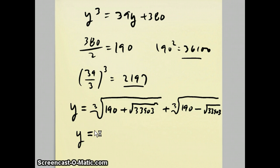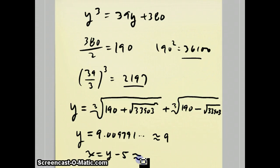Now when you plug this thing into a calculator, you're going to get an answer that's a little bit bigger than 9. It actually becomes 9.009791, which is pretty close to 9. And you might remember that x was equal to y - 5. That was the original substitution we did, which makes x a little bit bigger than 4.